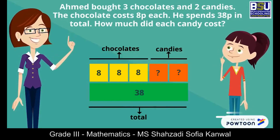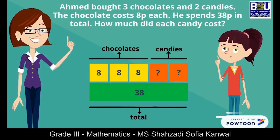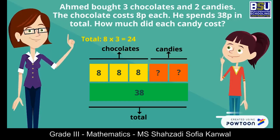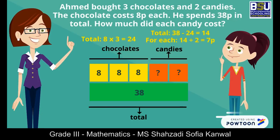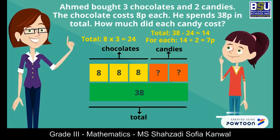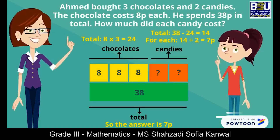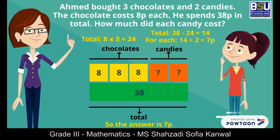And to find the value of each orange bar, we will first find the total value of the yellow bars combined: 8 multiplied by 3 is equal to 24. Next we will subtract 24 from 38 to get 14. So each orange bar shows half of this value, which is 7. So the answer is 7 pence.